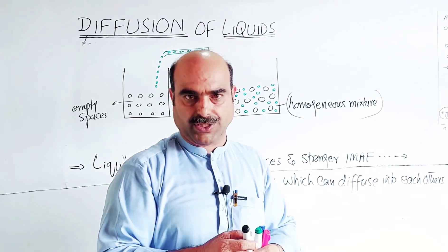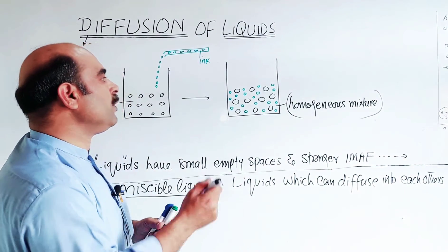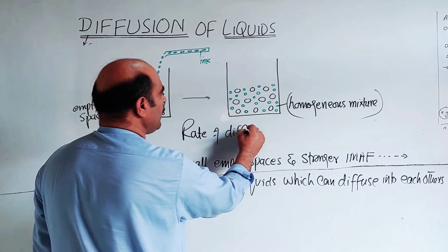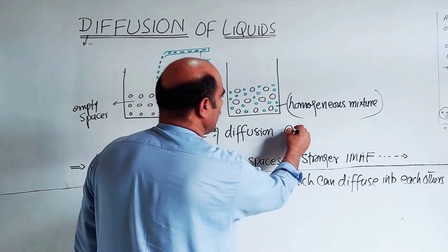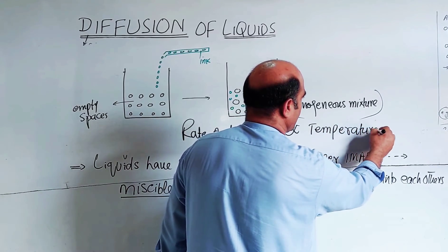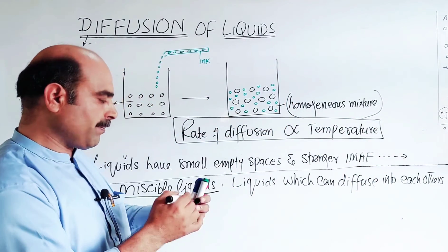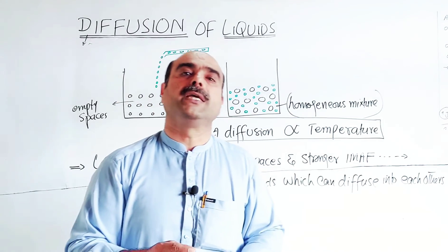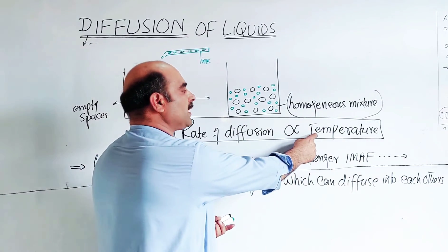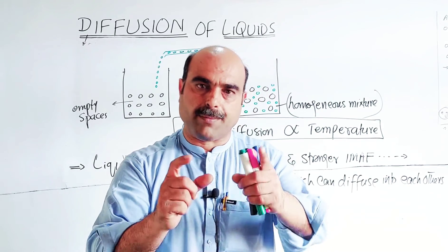The rate of diffusion also depends on temperature. When the temperature is high, the rate of diffusion is fast. When the temperature is low, the rate of diffusion is slow. Higher the temperature, higher will be the rate of diffusion of two liquids. Lower the temperature, slower will be the rate of diffusion between two liquids.